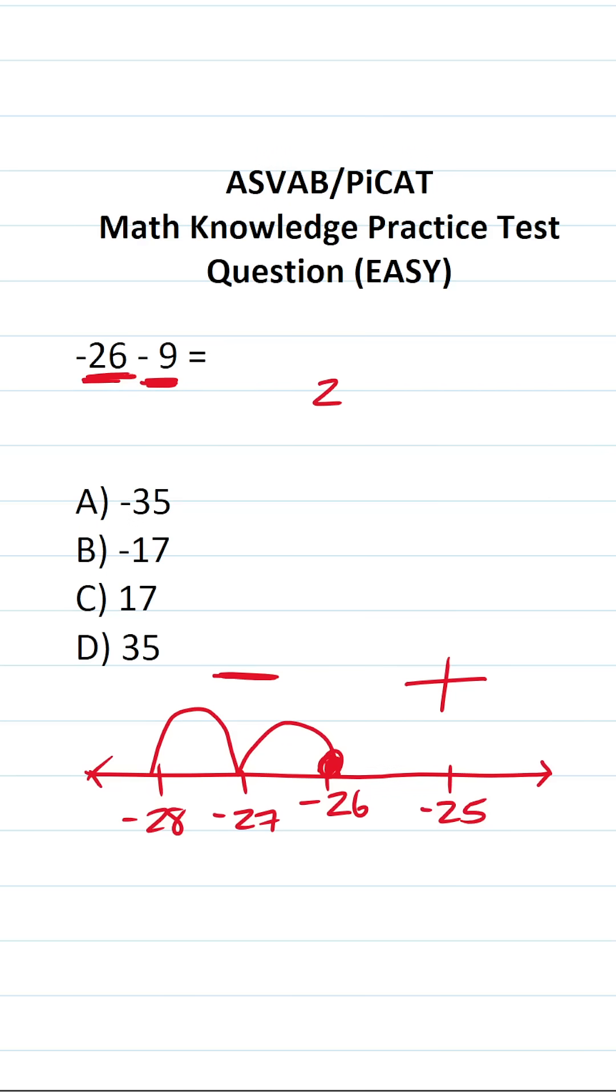Now to do that by hand, all you're going to do is 26 plus 9. 6 plus 9 is 15, carry a 1. 2 plus 1 is 3. But we know we're going to have a big negative value as a result, so this is going to be negative 35.